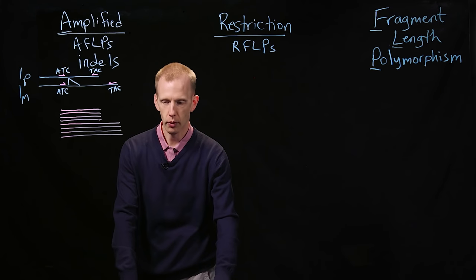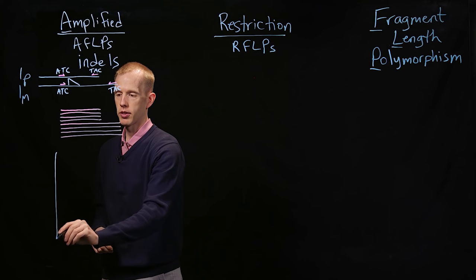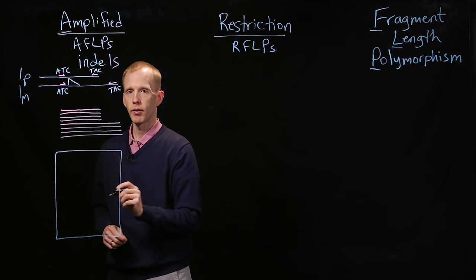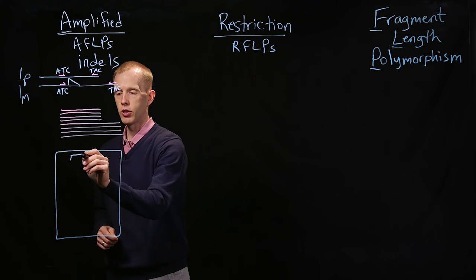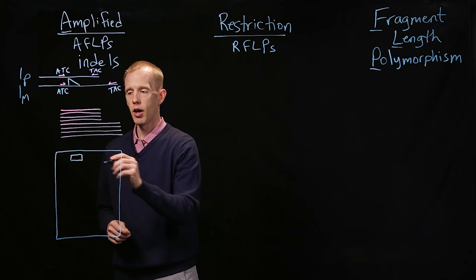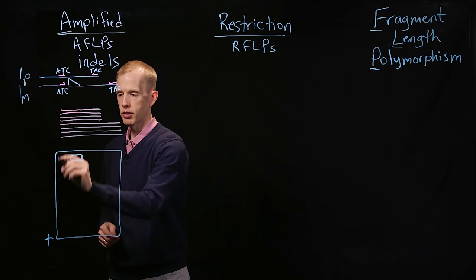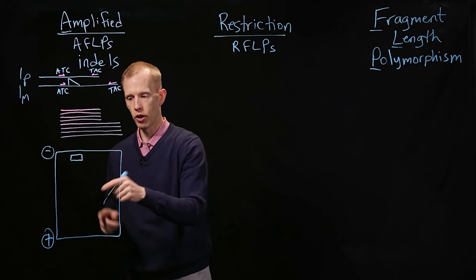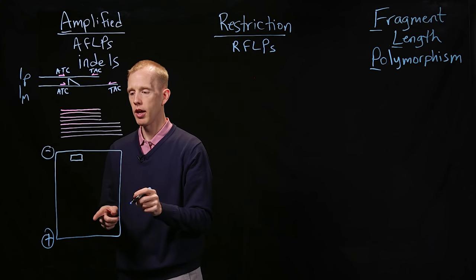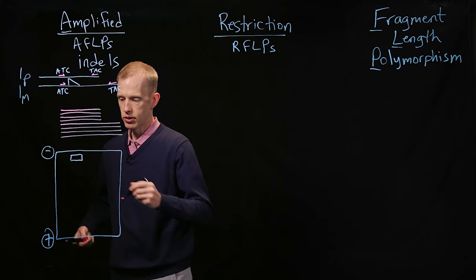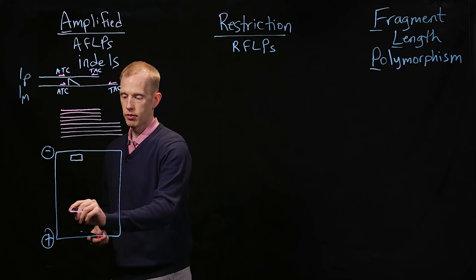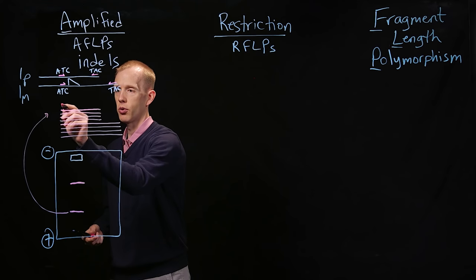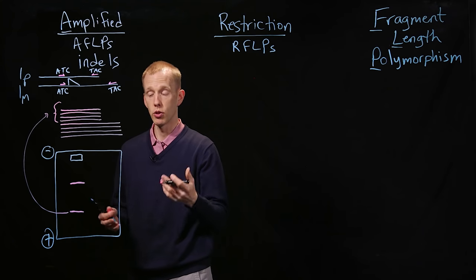So now you can imagine what would happen if you performed agarose gel electrophoresis with this sample. We're going to load the PCR reaction into a well at the top of the gel, apply an electric field, the positive at the bottom and the negative at the top. The DNA migrates through the gel, smallest fragments first, and so what we're going to wind up seeing is there's going to be a small fragment, a small band on the gel.